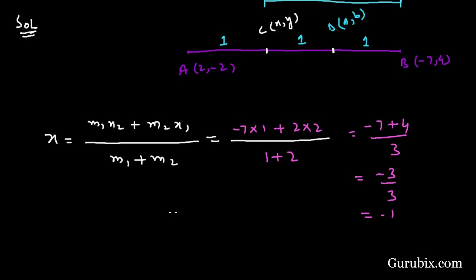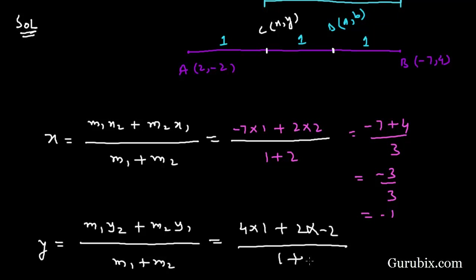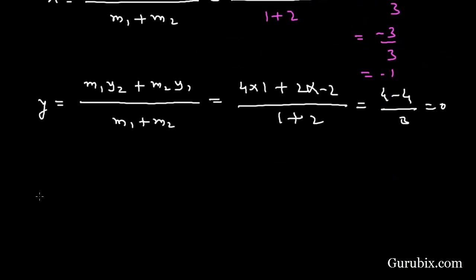Now we find the y-coordinate of point C using the section formula: y = (M1·Y2 + M2·Y1) / (M1 + M2). With M1=1 and M2=2: y = (1×4 + 2×(-2)) / (1+2) = (4 - 4) / 3 = 0/3 = 0. Therefore the coordinates of C are (-1, 0).